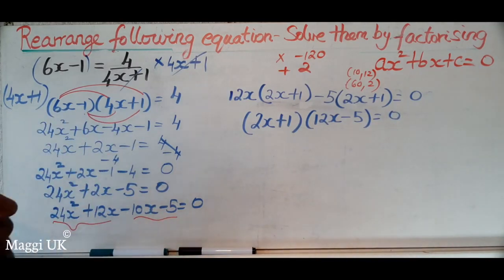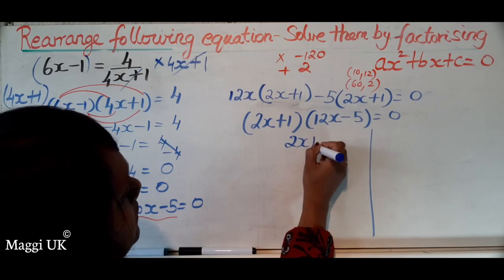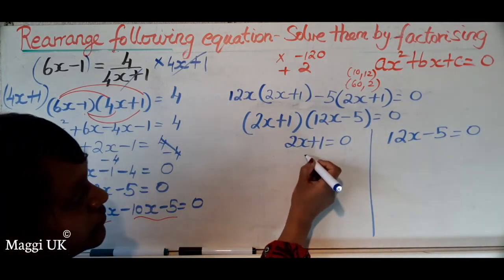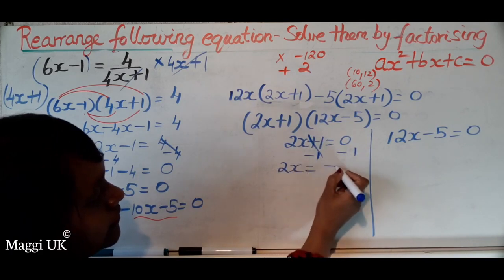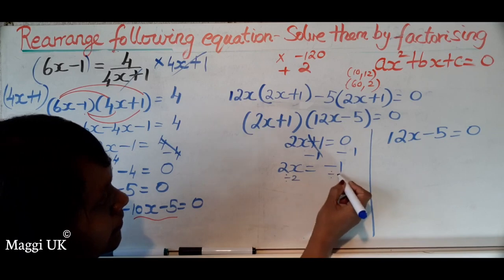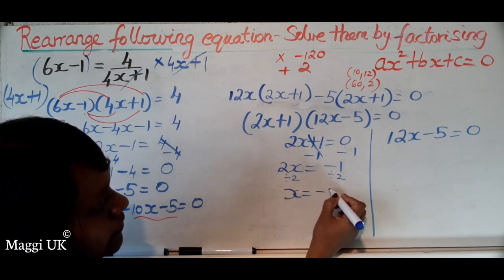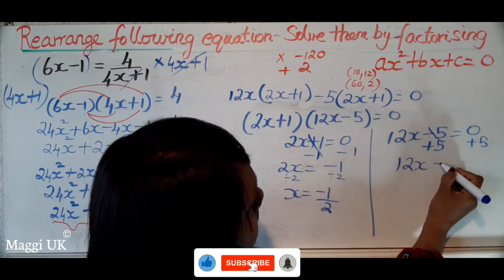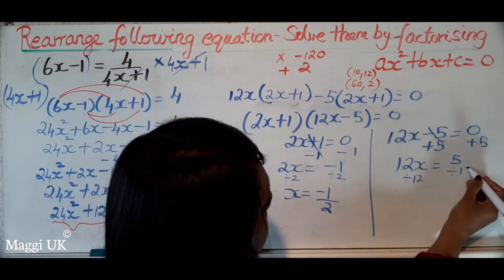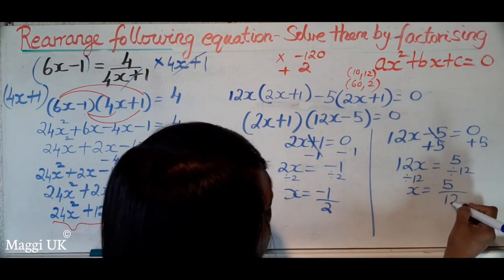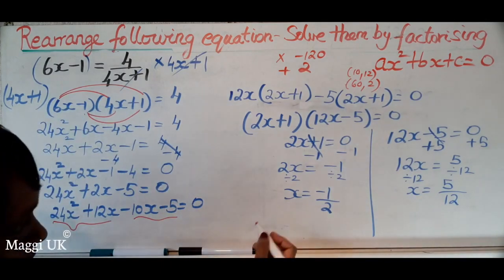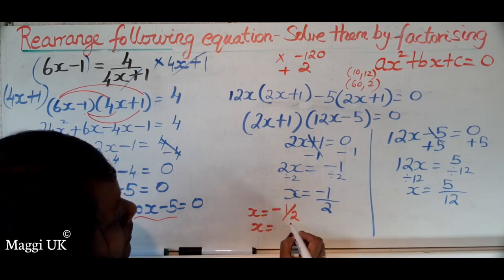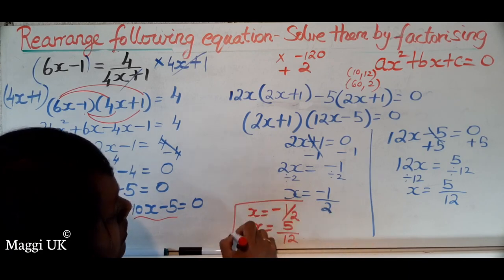We now find two values for x. From 2x plus 1 equals 0: subtract 1 to get 2x equals minus 1, so x equals minus 1 divided by 2, which is minus a half. From 12x minus 5 equals 0: add 5 to get 12x equals 5, so x equals 5 divided by 12. We can't simplify further, so the two values are x equals minus a half and x equals 5 over 12.